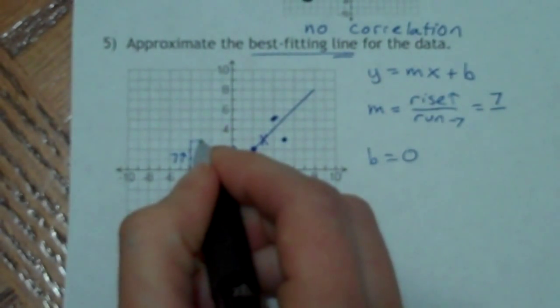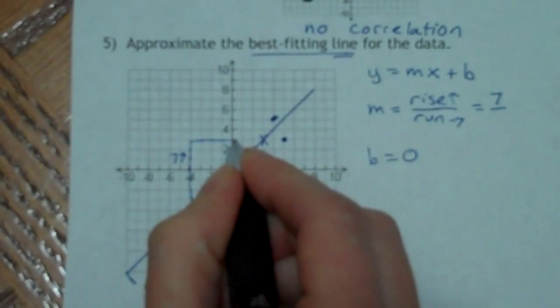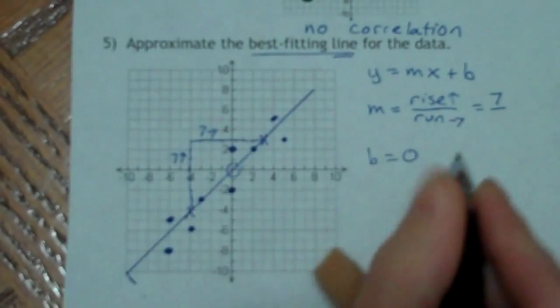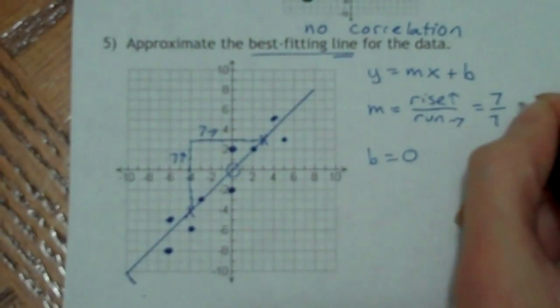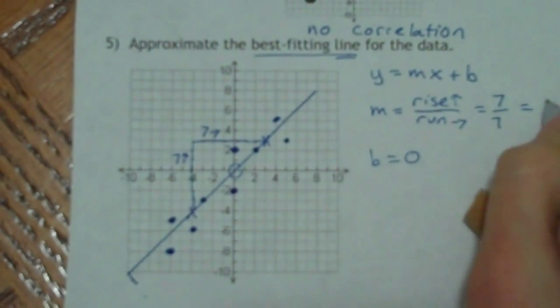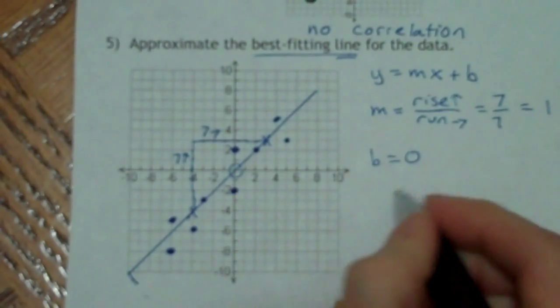And then my run, I go over one, two, three, four, five, six, seven. Well, that's convenient. So I also went over seven. So now I'm just going to simplify that. If you can, you won't always be able to simplify it. Seven goes into itself one time. So I've got my slope and my intercept. So now I just have to write my equation.